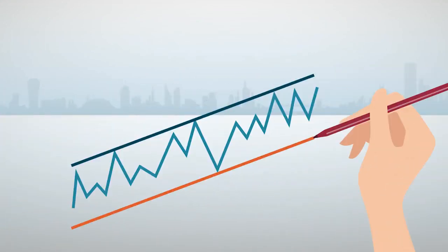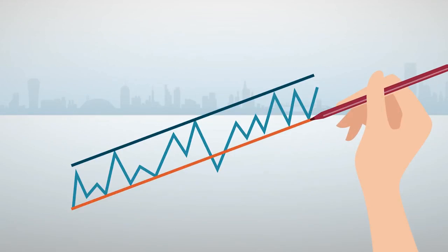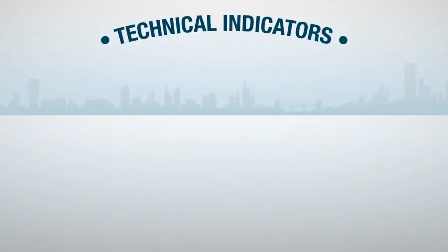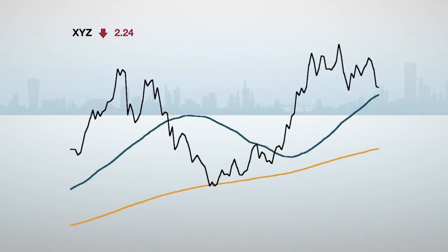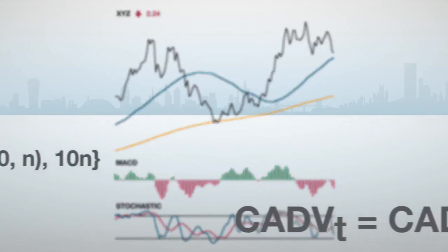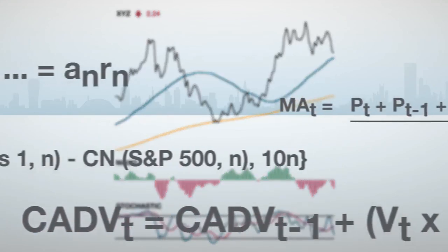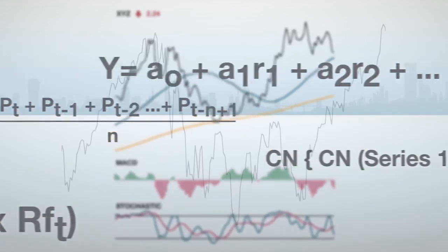But not all investors exclusively use support and resistance and price patterns. Drawing lines and finding shapes can be subjective. Because of this, some investors may use technical indicators. Technical indicators are graphical representations of chart data. Each indicator displays chart data, like price and volume, in a unique way, giving investors another perspective of the stock's performance. Because technical indicators are created using formulas and data, they may give investors a more objective way to examine a stock's performance.